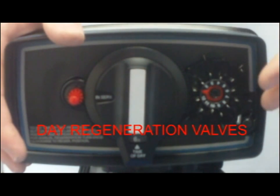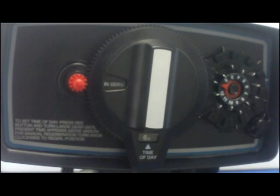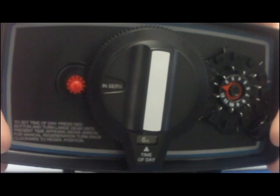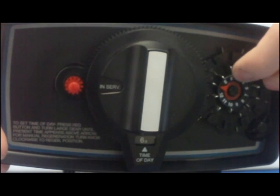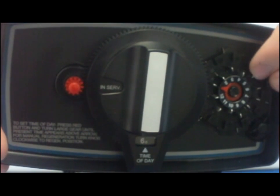Time clock valves, also called day regeneration valves, are set to regenerate the system after a certain number of days. The time clock valves come in a seven-day and twelve-day model. The twelve-day is more common of the two, as it is used in residential homes, while the seven-day is more common for commercial use.